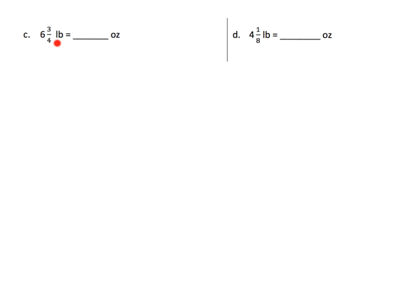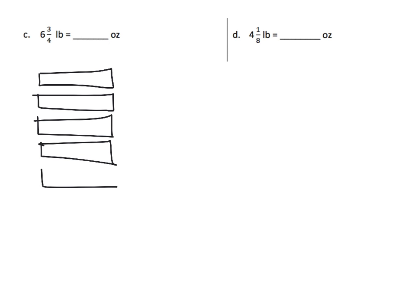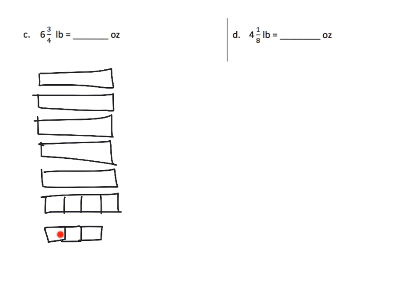Now we're going to practice some conversions. We've got six and three quarters pounds. We're going to draw six pounds — one, two, three, four, five, six. Now we need to draw three quarters of a pound, which means imagining each of those pounds chopped up into four pieces. So six and three quarters — there it is. We want to convert it into ounces. We remember that one pound is 16 ounces. So we've got 16 ounces, 16 ounces, 16 ounces, 16 ounces, 16 ounces.